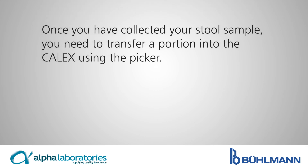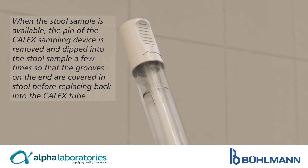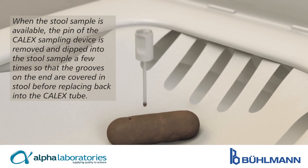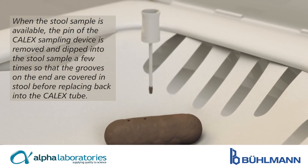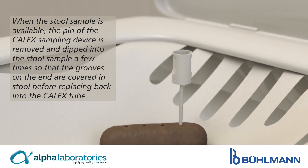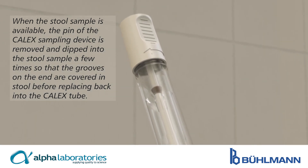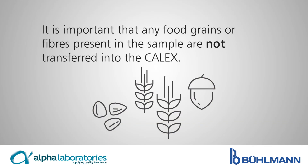Once you have collected your stool sample you need to transfer a portion into the calyx using the picker. When the stool sample is available, the pin of the calyx sampling device is removed and dipped into the stool sample a few times so that the grooves on the end are covered in stool sample before placing back into the calyx tube. It is important that any food grains or fibres present in the sample are not transferred into the calyx.